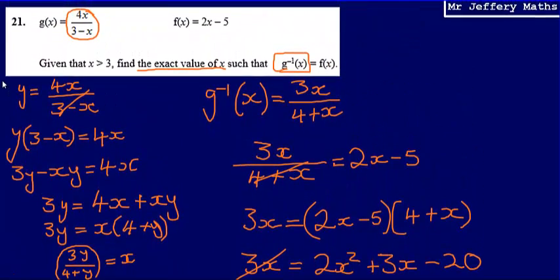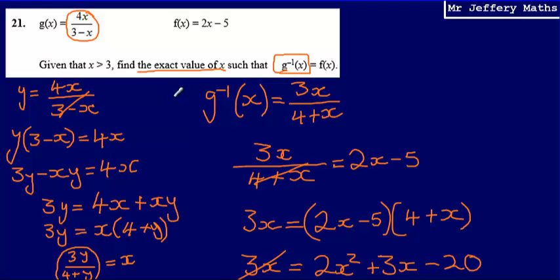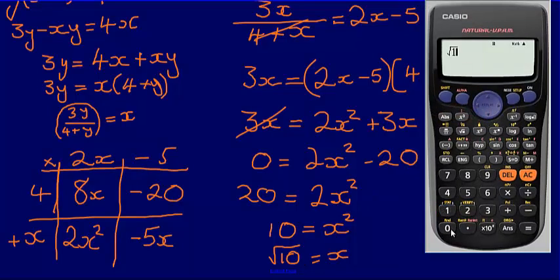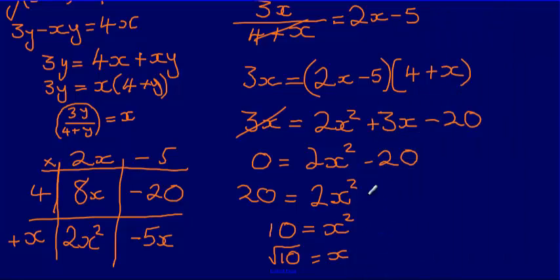An important point: we don't need to calculate the square root of 10 as a decimal, because the question asks for the exact value. The square root of 10 is an irrational number, meaning the decimal digits are never ending, so it's impossible to express it exactly as a decimal. Therefore the exact answer is simply x equals root 10.